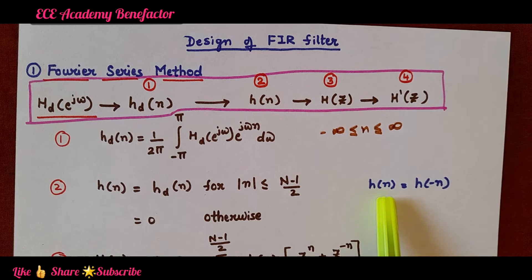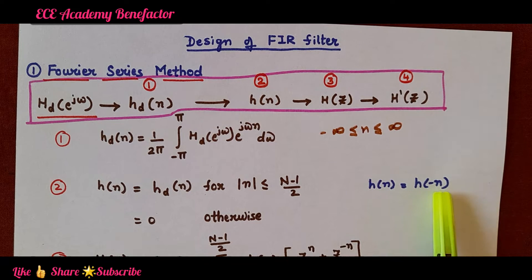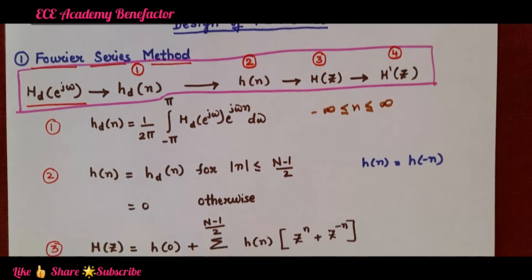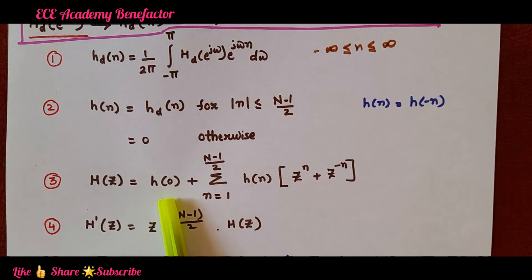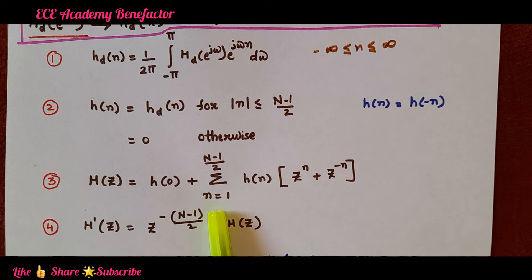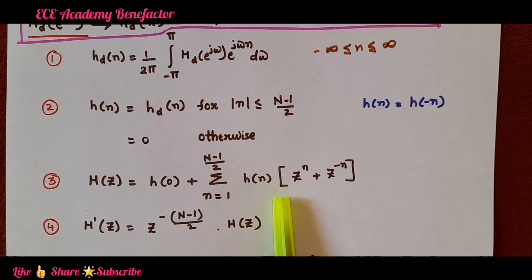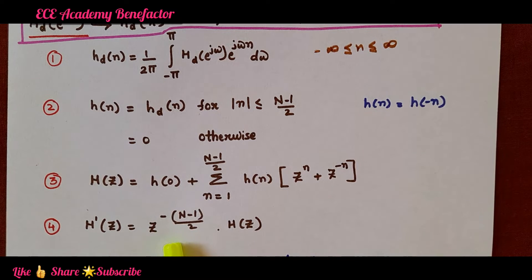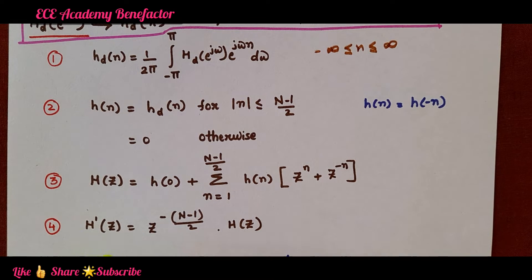For this range h(n) equals h_d(n), and for a symmetrical impulse response h(n) = h(−n). The third step is to find the transfer function H(z), computed as: H(z) = h(0) + Σ from n=1 to (N−1)/2 of h(n) · [z^n + z^(−n)]. This contains positive powers of z, so it is not physically realizable. To make it realizable, H(z) is multiplied by z^(−(N−1)/2) to get H'(z). These are the 4 steps for design of FIR filter using the Fourier series method.